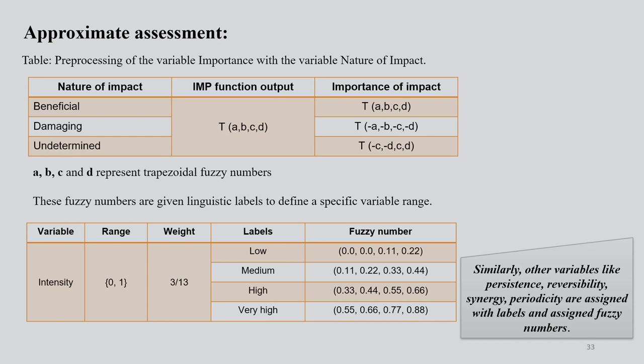The result of preprocessing the variable importance with the variable nature of impact: you get nature of impact and importance of impact - either beneficial, damaging, or undetermined. The IMP function output T(a,b,c,d) - in case of beneficial it will be all positive, in case of damaging it will be negative, and in case of undetermined you may get some calculated output which may not give any clear direction. Here a, b, c, d represent trapezoidal fuzzy numbers.